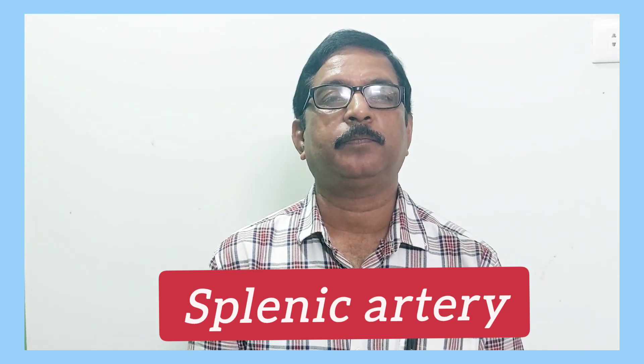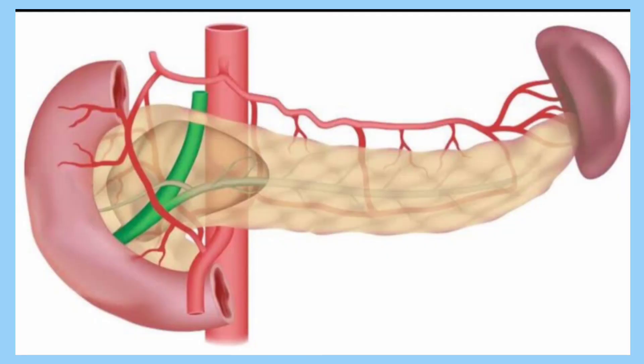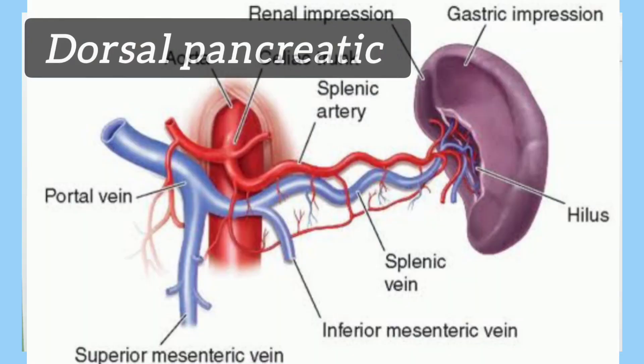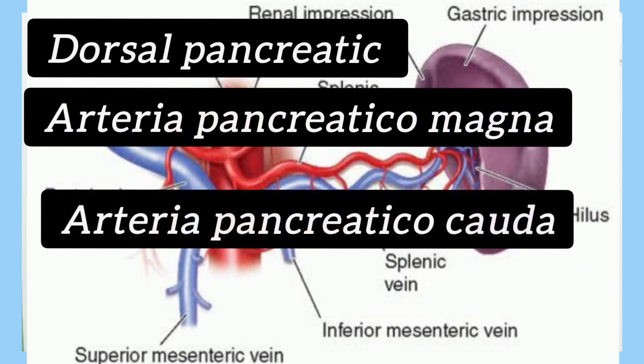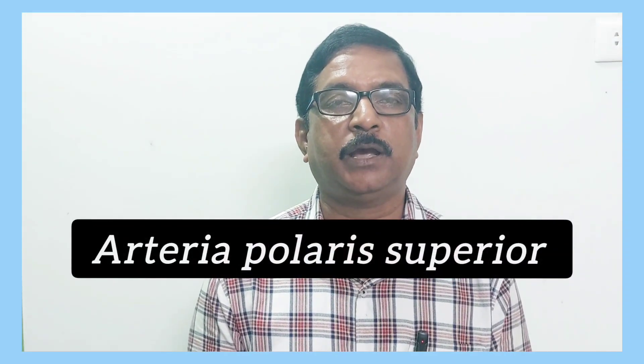The next tortuous artery in the body is the splenic artery. The splenic artery is one of the important branches from the celiac trunk — in fact it is the largest branch of the celiac trunk. It runs behind the posterior surface of the stomach, being a part of the stomach bed, and reaches the spleen through the hilum. The length of the artery is 8 to 32 centimeters. On its tortuous course from the celiac trunk to the spleen, it gives branches like the dorsal pancreatic branch, arteria pancreatica magna, arteria pancreatica caudae, posterior gastric artery (in 40% of cases), short gastric arteries, left gastroepiploic artery, and before entering the hilum of the spleen it gives two branches: one for the upper pole and one for the lower pole — arteria polaris superior and arteria polaris inferior.